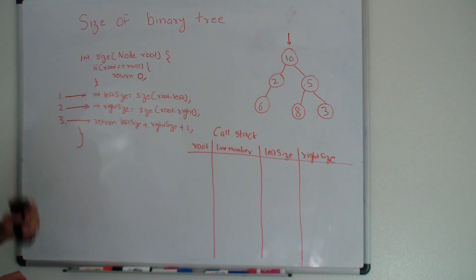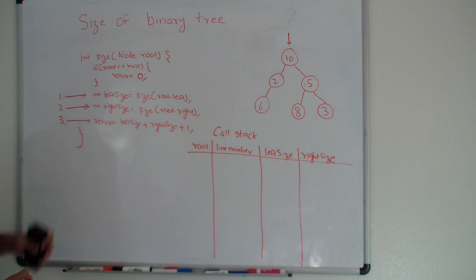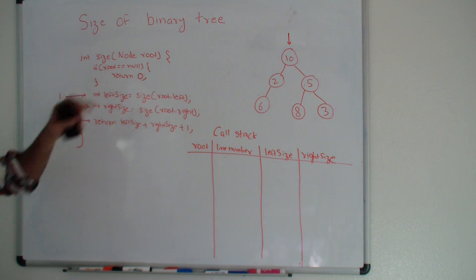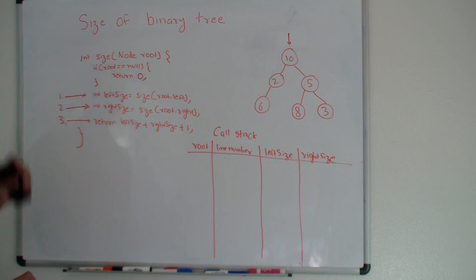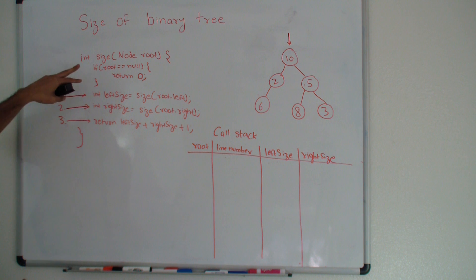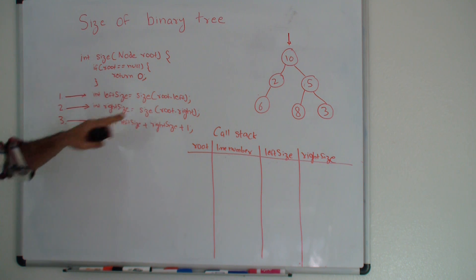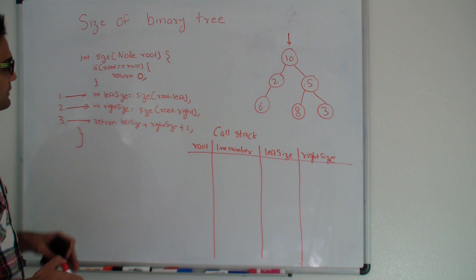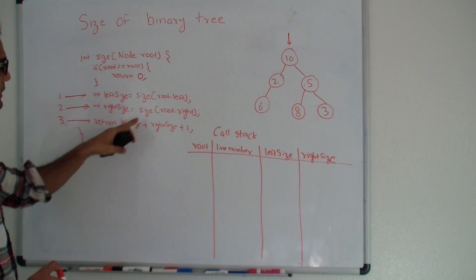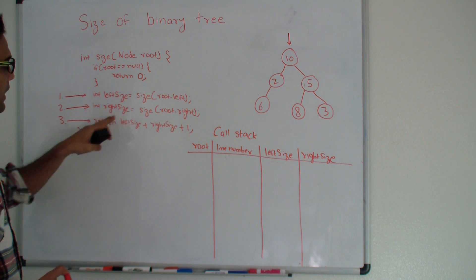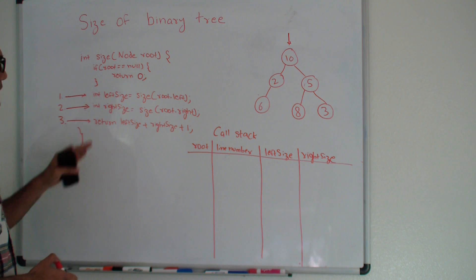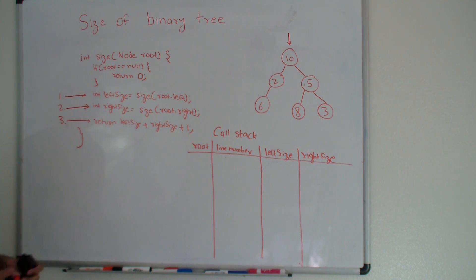Here I have a recursive code written for this question. The name of the function is size — it takes root and returns the size. If the root is null it returns 0; otherwise it goes on its left side recursively, calculates the left size, calculates the right size, then adds them up plus 1, and returns that to the calling function.